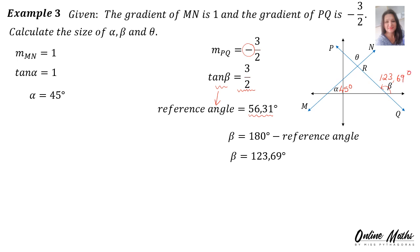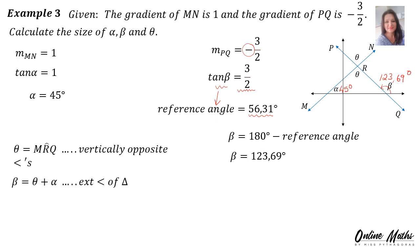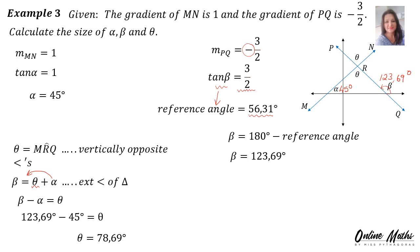Now all that's left is to work out the size of theta. Angle MOQ is also equal to theta because they are vertically opposite angles, and vertically opposite angles are equal. We can say that angle beta, this exterior angle, is equal to theta plus alpha, because the exterior angle equals the sum of the opposite interior angles. Making theta the subject: theta equals beta minus alpha. Substituting: theta equals 123.69 minus 45, therefore theta is 78.69 degrees.